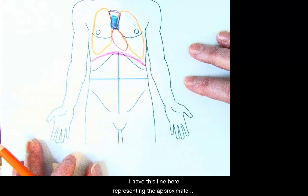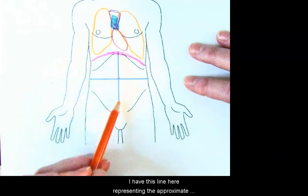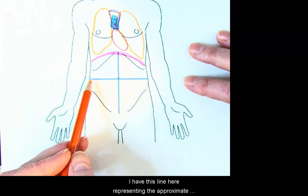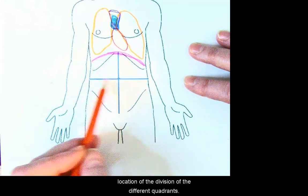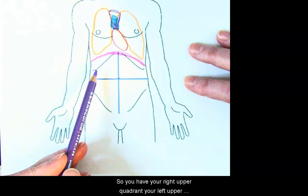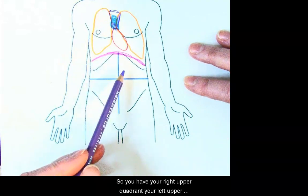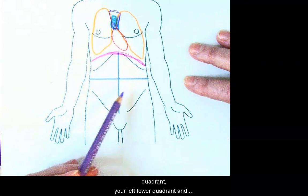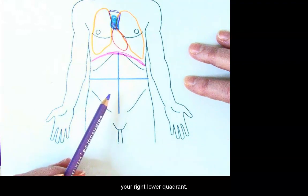Now in the abdominal pelvic cavity, I have this line here representing the approximate location of the division of the different quadrants. So you have your right upper quadrant, your left upper quadrant, your left lower quadrant, and your right lower quadrant.